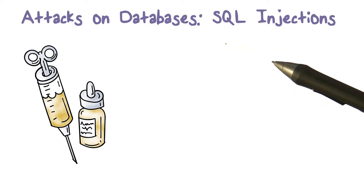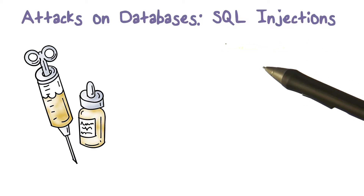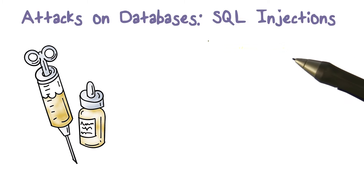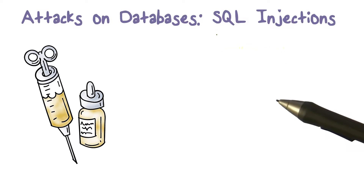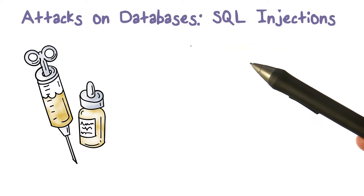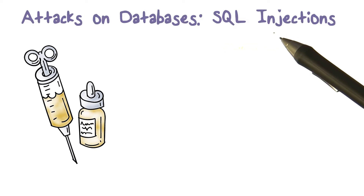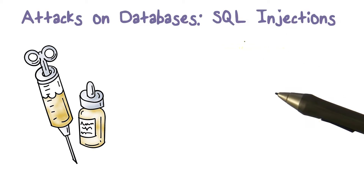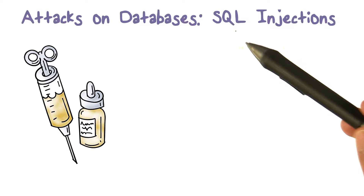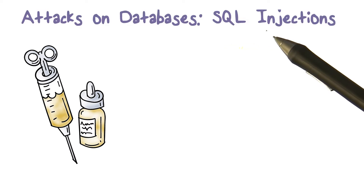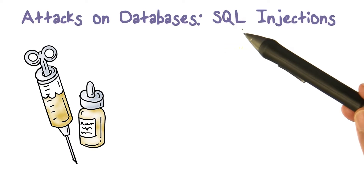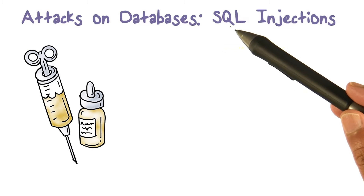We said databases — we need to talk about securing access to them, because there's something different about databases. There's structure in the data and how we access it. We talked about access control, which is something we discussed before. So are there unique kinds of attacks that are possible on databases? What kind of threats are possible because of the structure of the data or the way we access it through query languages, like SQL?